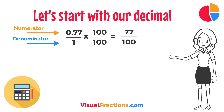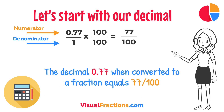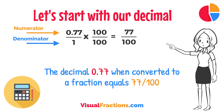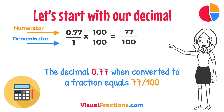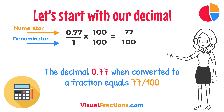And there you have it. The decimal 0.77, when converted to a fraction, equals 77 one-hundredths. This fraction is in its simplest form and cannot be further simplified.